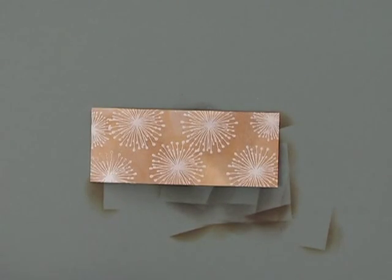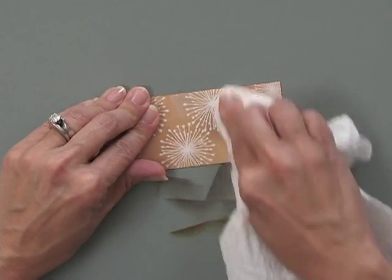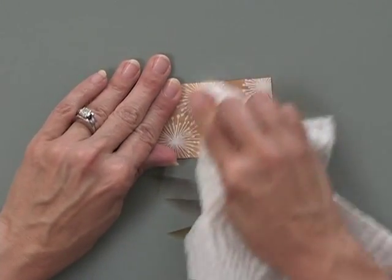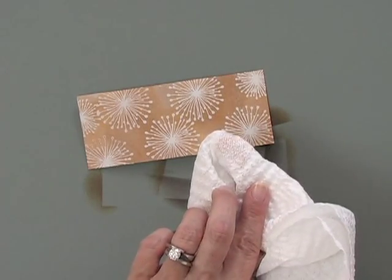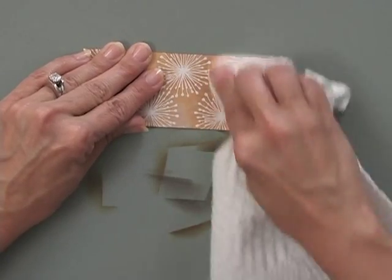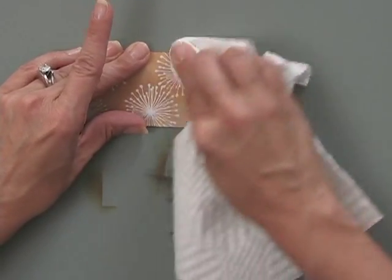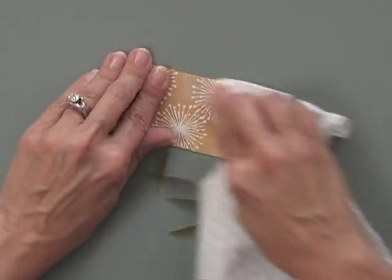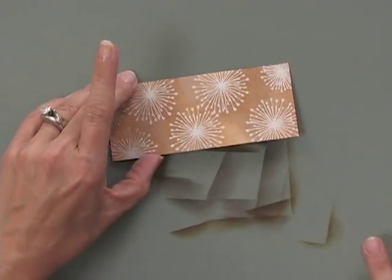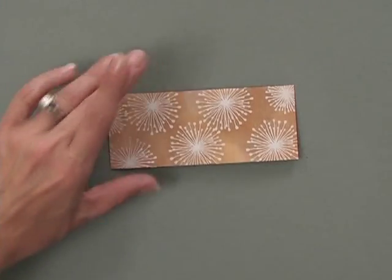So my final step for the Emboss Resist Technique is to take a paper towel and rub the paper towel over the surface. You can see that makes the dandelions pop out even more because there can be a thin film of ink covering up the dandelions. That's never going to dry because that's on top of embossing powder. So just take a paper towel and wipe that all off and your images will just pop out even more.